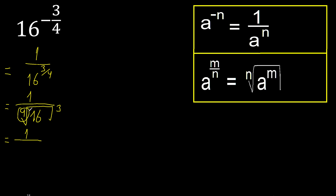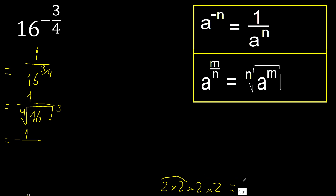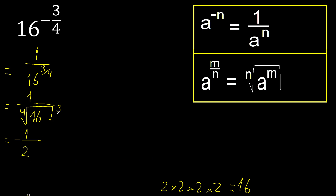Fold, therefore fold — equal parts that multiply is 16. 2 multiplied by 2 is fold, fold, fold, multiplied by fold is 16. Therefore here: 2 exponent 3, 2 multiplied.